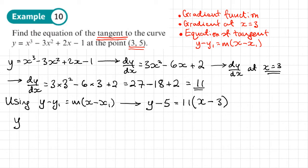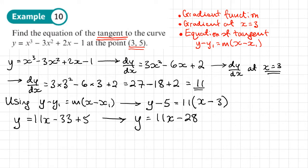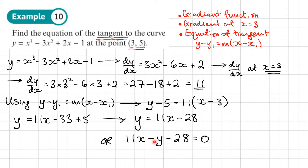Expanding the brackets: y equals 11x minus 33, then adding 5 to both sides gives y equals 11x minus 28. We can also write it in the form ax plus by plus c equals 0, which gives 11x minus y minus 28 equals 0. So we can leave it in any one of those three forms.